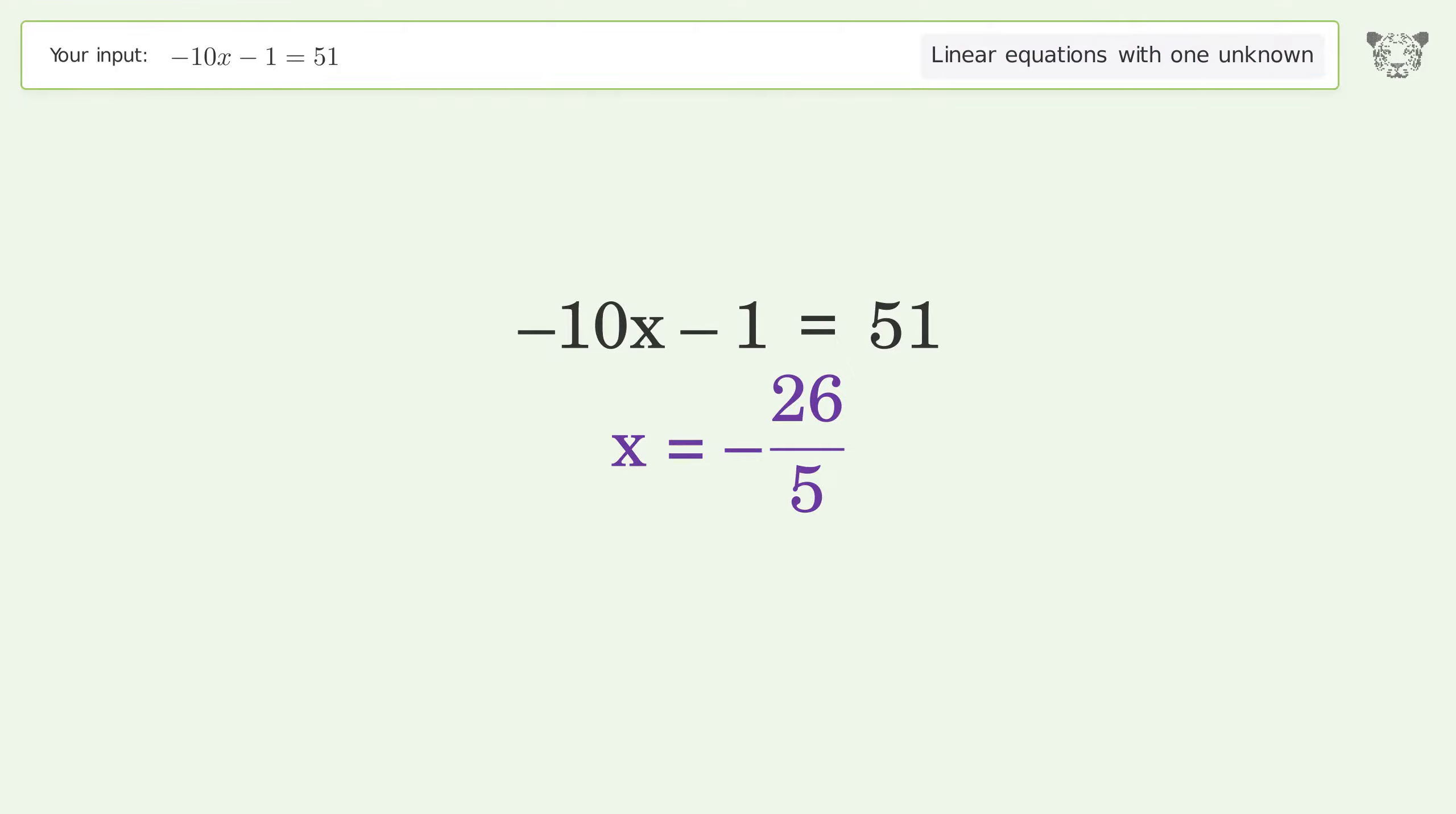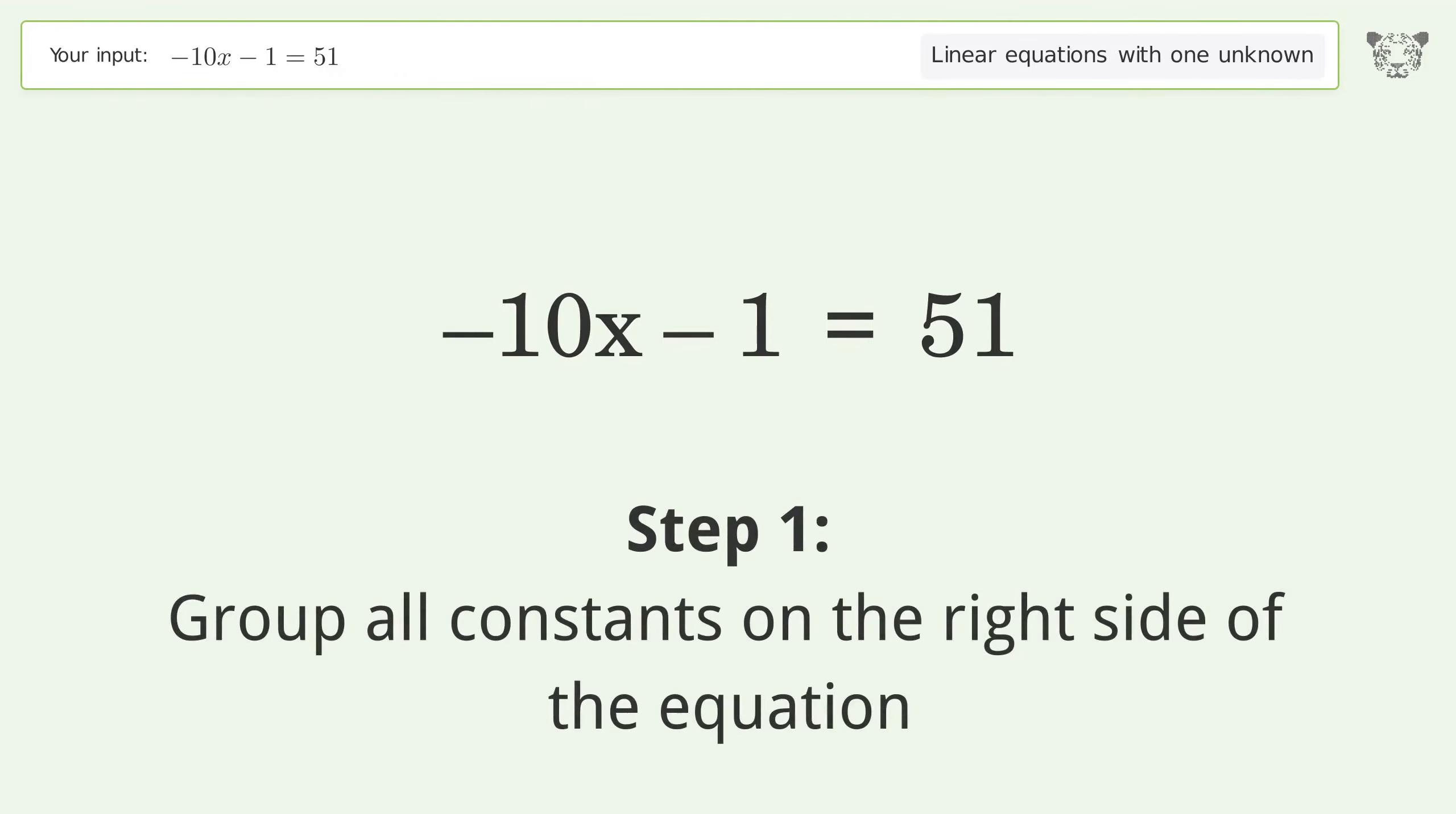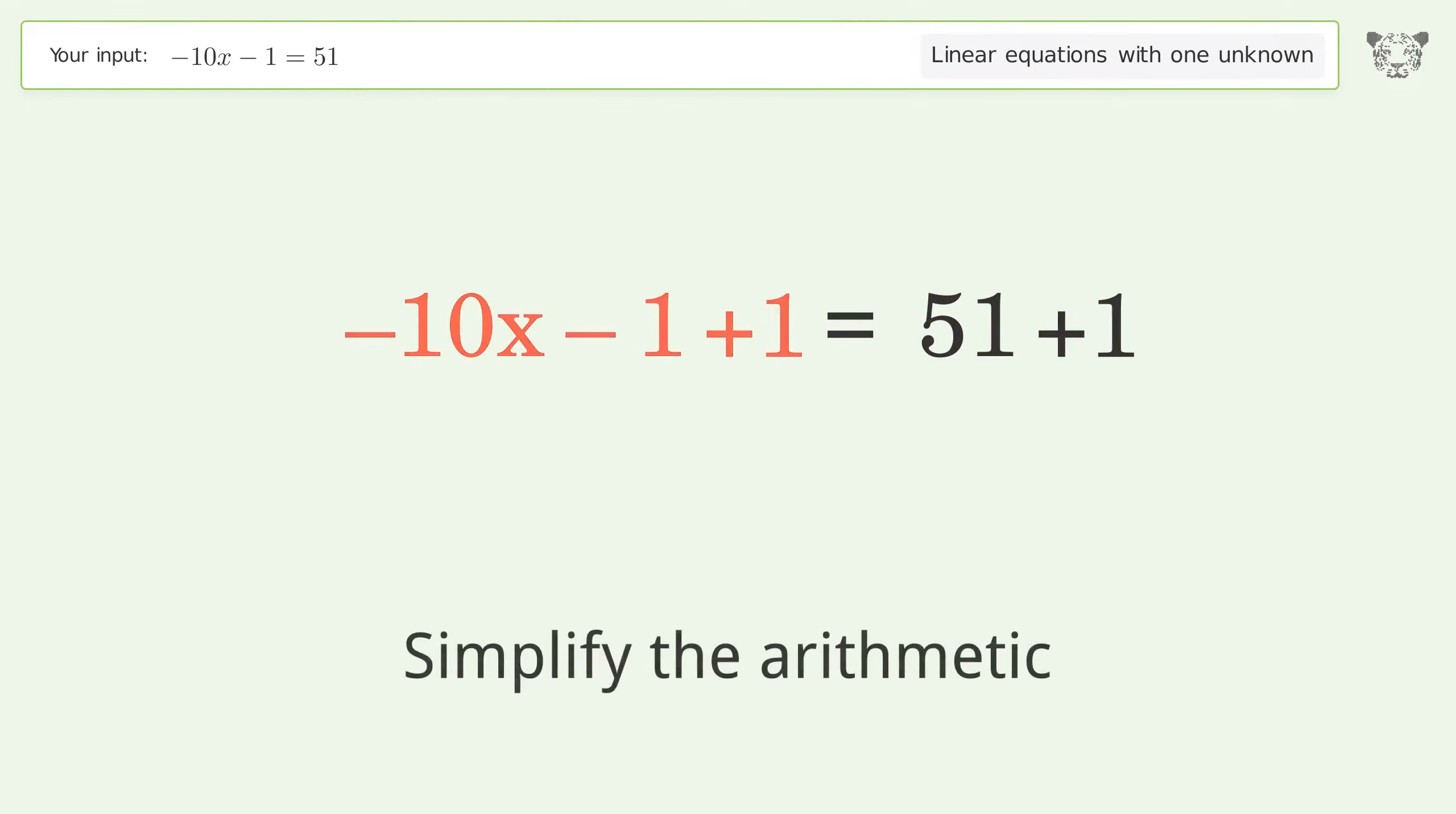Let's solve it step by step. Group all constants on the right side of the equation. Add one to both sides. Simplify the arithmetic.